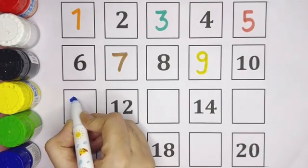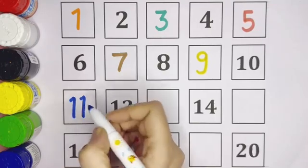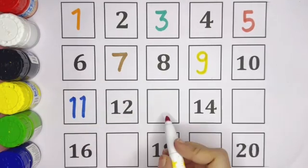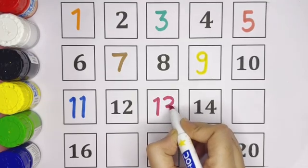Ten. The missing number is eleven, one one, eleven. Twelve. After twelve, thirteen. The missing number is thirteen.